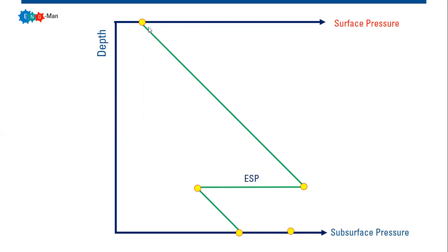As you can see, we have five points here — five important pressure points — and in this video I'm going to talk about those. The first one is reservoir pressure, or static bottom hole pressure, which is the average reservoir pressure.